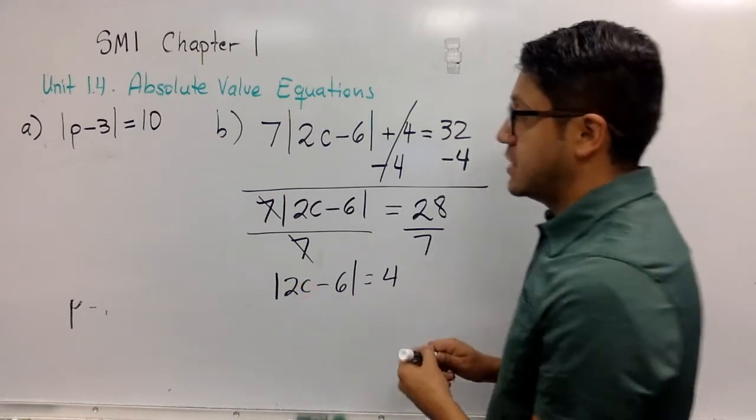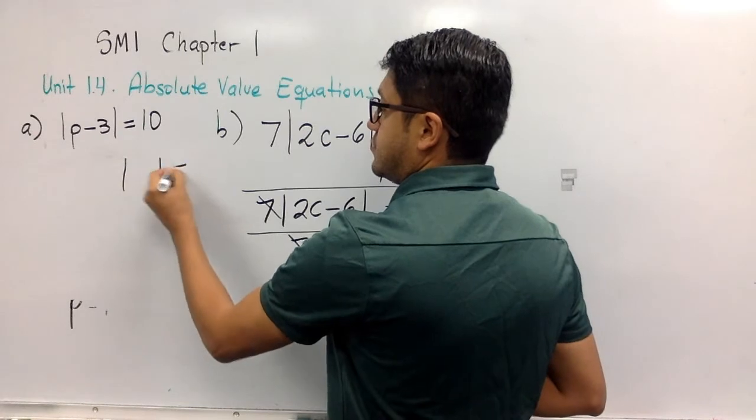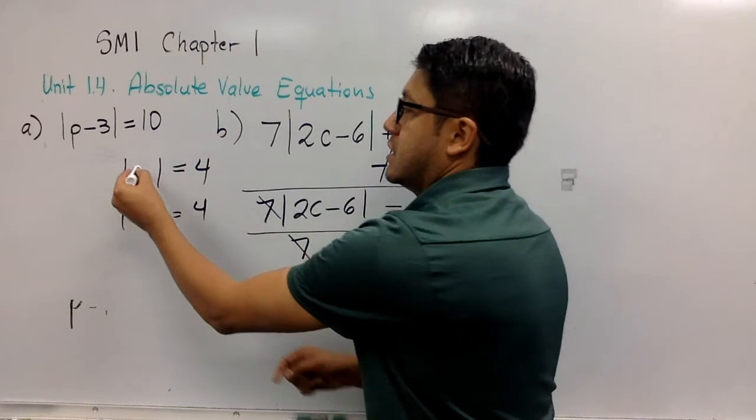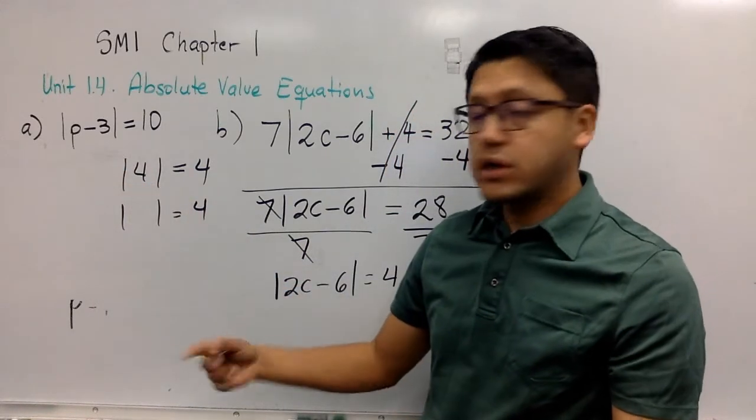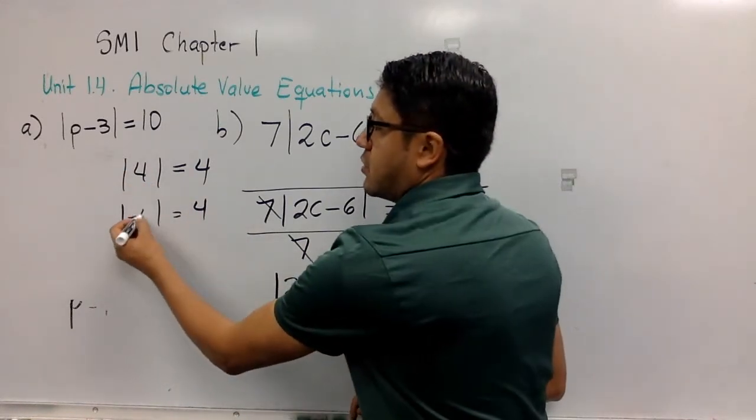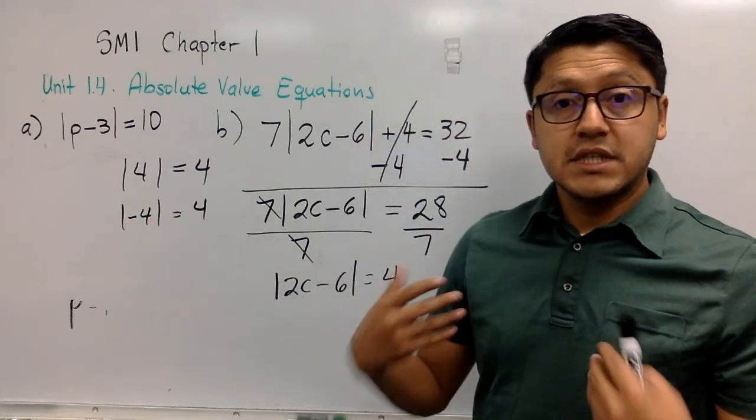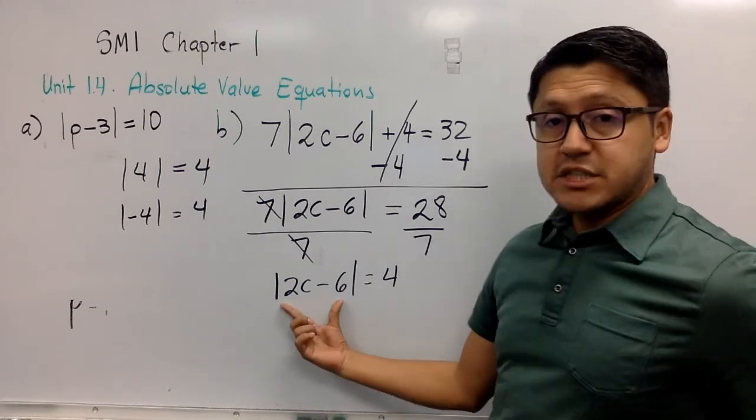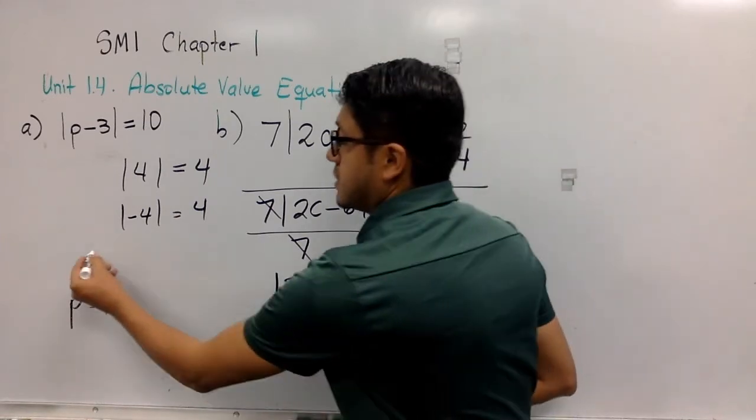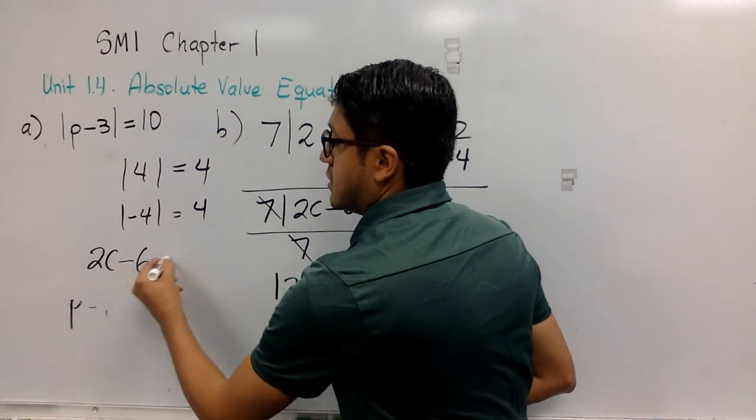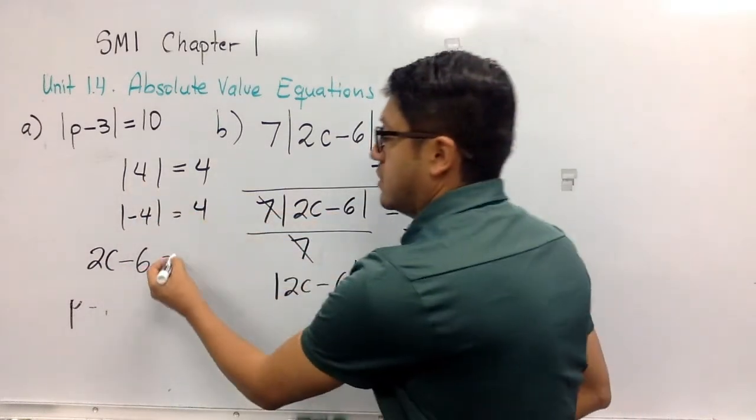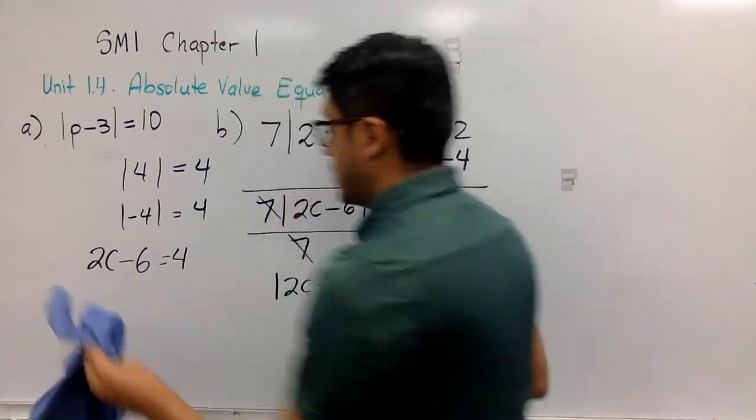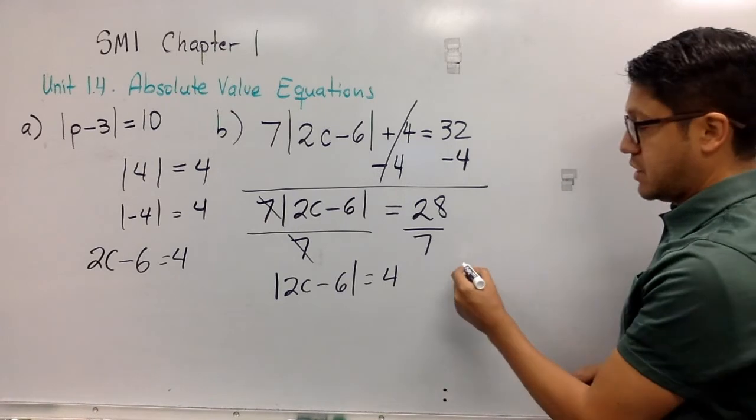The two options are that this number inside is 4 or that this number inside can also be negative 4. Taking that into account, I can state that this expression 2c minus 6 can be equal to 4, but it can also equal 2c minus 6 can also be equal to negative 4.